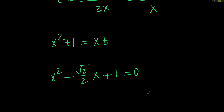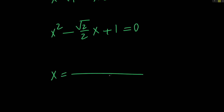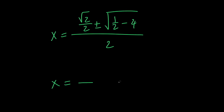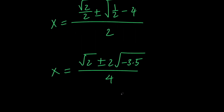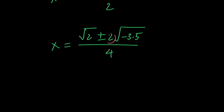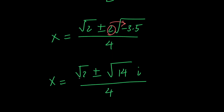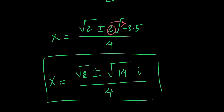Now at this point, in order to solve this for x, we just need to use the quadratic formula. So x equals root 2 divided by 2 plus or minus the square root of root 2 divided by 2 squared, which is 1 over 2, minus 4, all divided by 2. Let's go ahead and multiply both the top and the bottom of this fraction by 2 to get root 2 plus or minus 2 times the quantity negative 3.5, divided by 4. Bringing the 2 in, we get x equals root 2 plus or minus the square root of negative 14, which can be written as root 14 times i, divided by 4. So x equals root 2 plus or minus root 14 times i, divided by 4, are the two complex solutions of our equation.